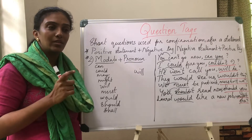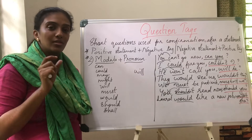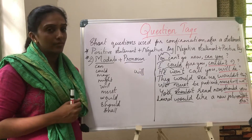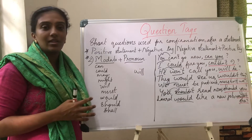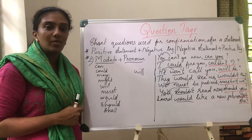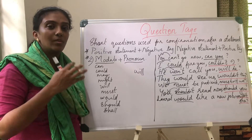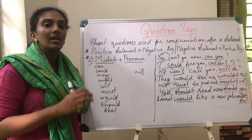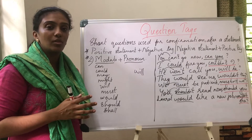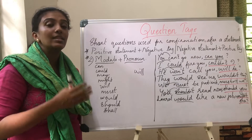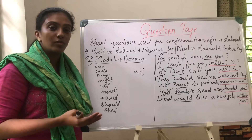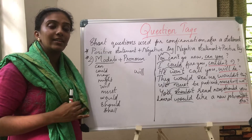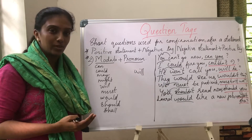We have a quick revision. Question tags are short questions used after a statement for confirmation. The first and foremost rule goes like this: a positive statement is always followed by a negative tag, and a negative statement is always followed by a positive tag.